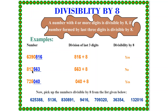The next number is 812563. The last 3 digits — the hundreds place number — is 563. We divide 563 by 8 and it does not divide evenly, so the whole number 812563 is not divisible by 8. The last example is 725040. The last 3 digits are 040. We divide 040 by 8, and it divides evenly, so 725040 is divisible by 8.